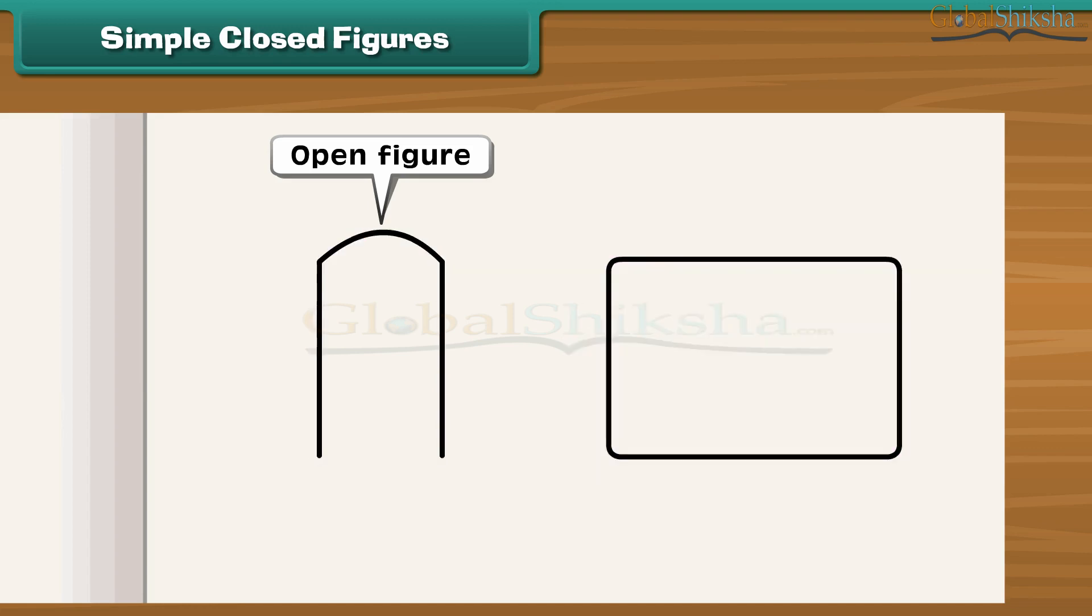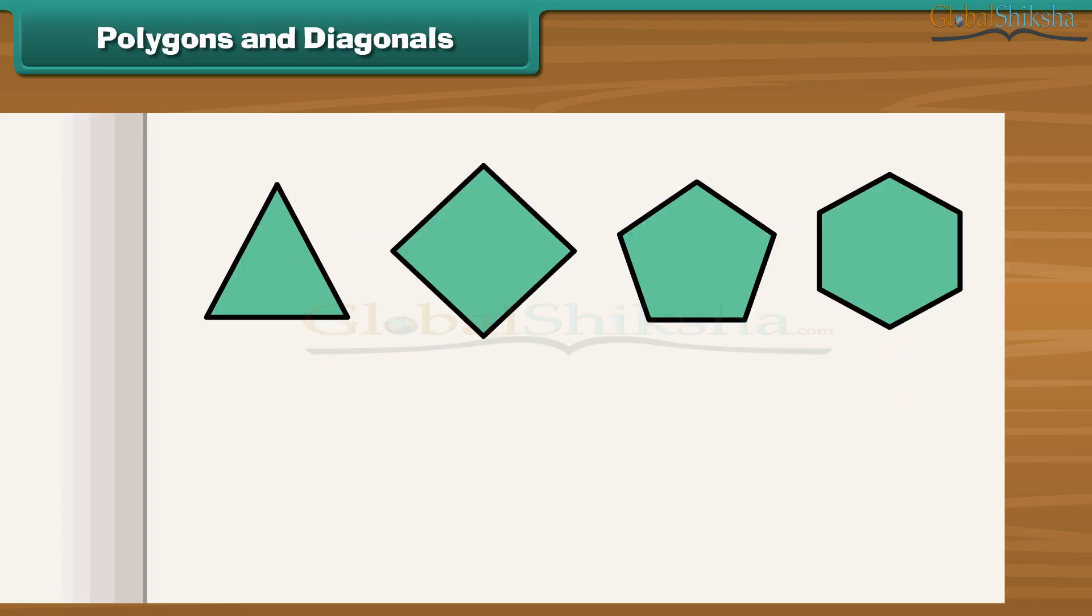What about the second figure? This starts with one point and ends at the same point. Thus, it encloses a region inside it. A figure of this type is called a closed figure.